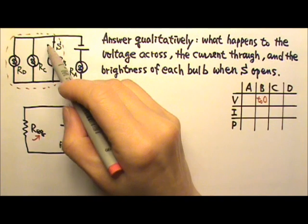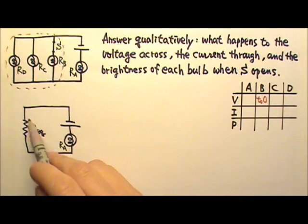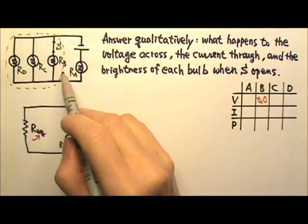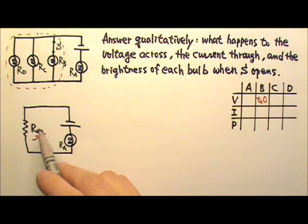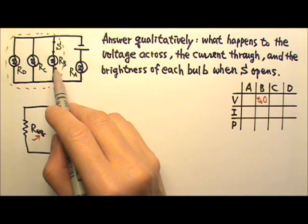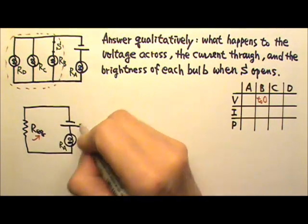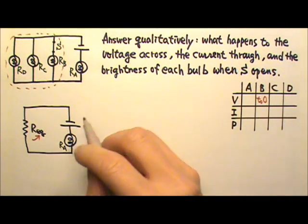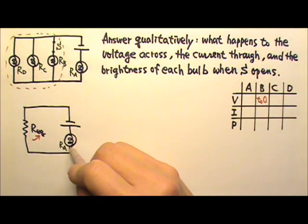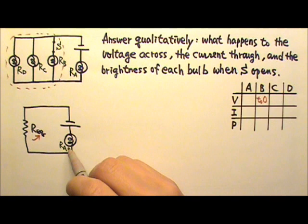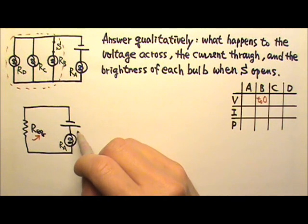So when the switch opens, the equivalent resistance for this combination increases because we get one fewer resistor in parallel. And these two are in series, so they have the same current, but they have to share the voltage provided by the power supply.